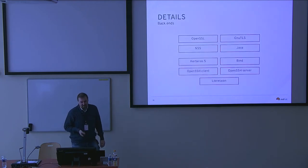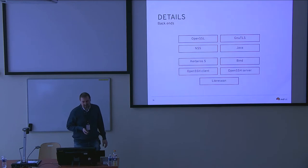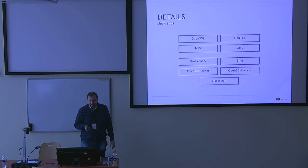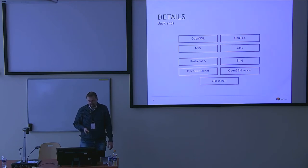So the details: we have these crypto libraries and other applications that are considered core. These are OpenSSL, GnuTLS, NSS, and Java for crypto libraries. The other applications, which basically are not using the TLS protocol but other secure protocols, are Kerberos 5, BIND, OpenSSH — which has two configurations for client and server separately — and libreswan for IPsec and IKE.